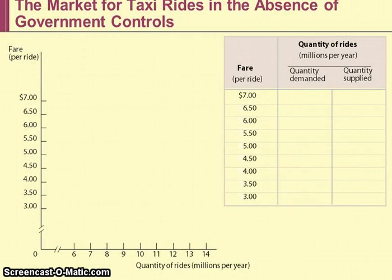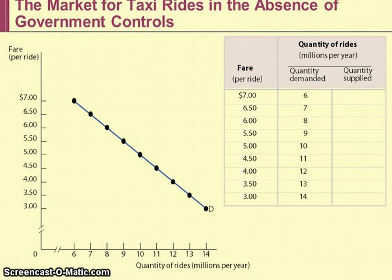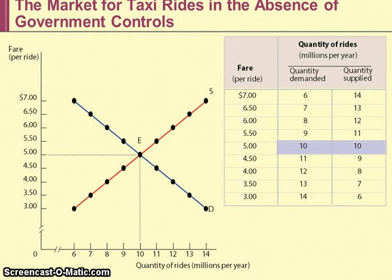Let's apply these new terms to this example. This graph shows the market for taxi rides in New York City in the absence of government controls. According to this data, the equilibrium price of a taxi ride is $5 and 10 million rides per year is the equilibrium quantity.